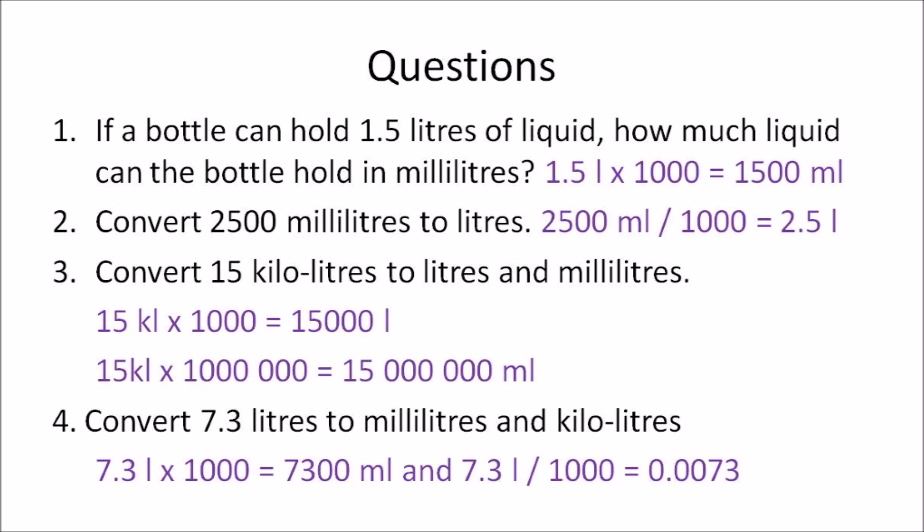For question three, you need to convert kiloliters to liters: 15 kiloliters multiplied by 1000 gives you 15,000 liters. Then 15 kiloliters multiplied by 1,000,000 gives you 15 million milliliters, because you're converting to liters and then to milliliters — that's 1000 multiplied by 1000, which is 1 million.